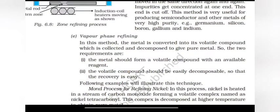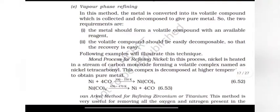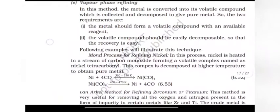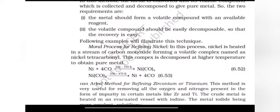Van Arkel refining. In this method, the metal is converted into its volatile compound which is collected and decomposed to give pure metal. So the two requirements are: metal should form a volatile compound with an available reagent. The volatile compound should be easily decomposable so that recovery is easy. Following example will illustrate modern process for refining nickel.